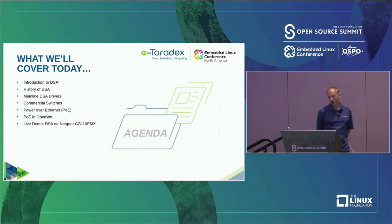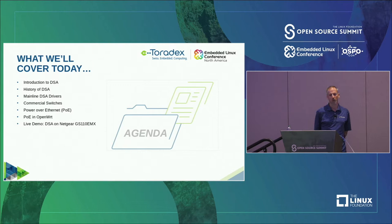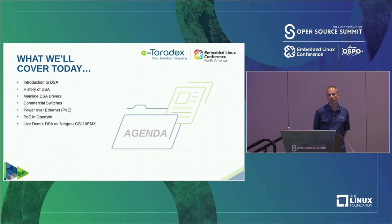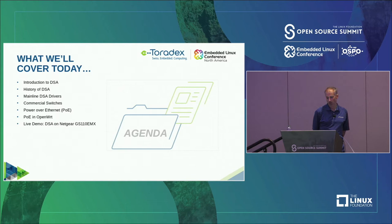What am I talking about today? I will give a quick introduction to DSA, then look at the history — what was there before and what's happening with DSA. Then we'll look at how a commercial switch looks on the inside, and how one can run mainline Linux on those. Another topic I want to cover is Power over Ethernet — you can run open source software on it and have full control over things like how many watts to give on a port. I'll give an overview of that and show how we can run OpenWRT, and at the end I conclude with a live demo.